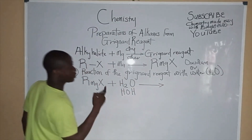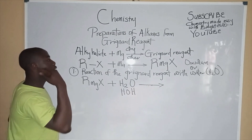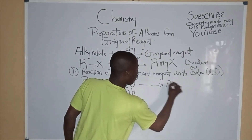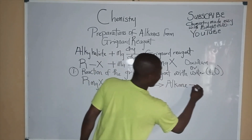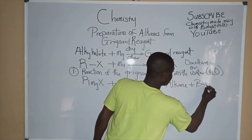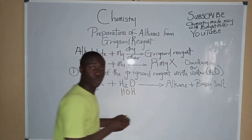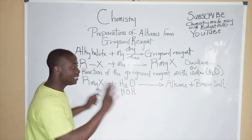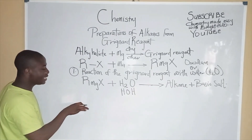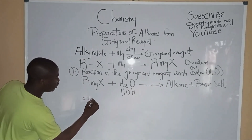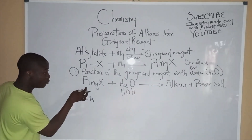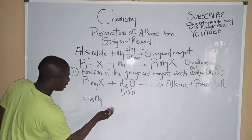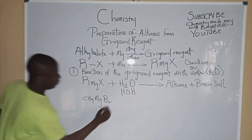What would be our product? Whenever the Grignard Reagent reacts with water, we get an alkane and a basic salt. Basic salts are compounds that contain the hydroxyl group. For example, using CH3 as our alkyl group and bromine as the halogen, plus water written as HOH.